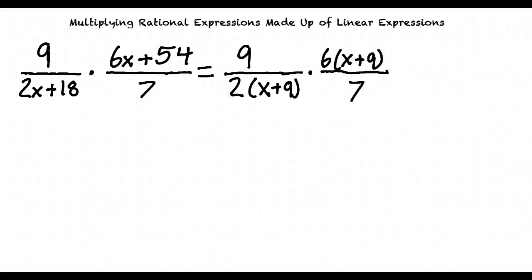Now we cancel the common factors which leaves us with 9 over 1 times 3 over 7. This can be multiplied out to 27 over 7.